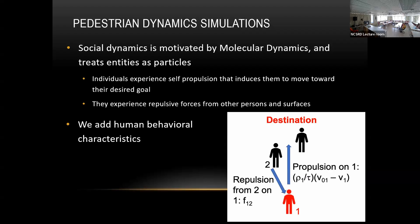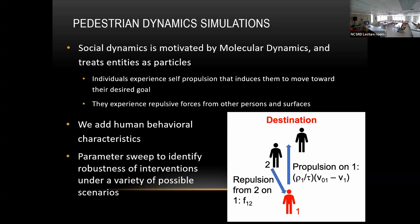However, there are human behavioral characteristics. For example, on a plane, if there are people in the row ahead of you, you let them go into the aisle before you. So we add those characteristics as part of the code rather than the model, because some are hard to model in social dynamics itself. Then we do a parameter sweep to identify possible interventions.